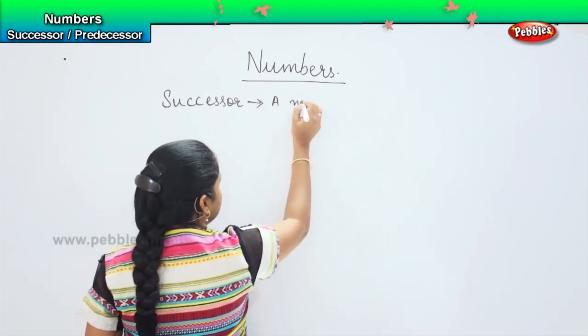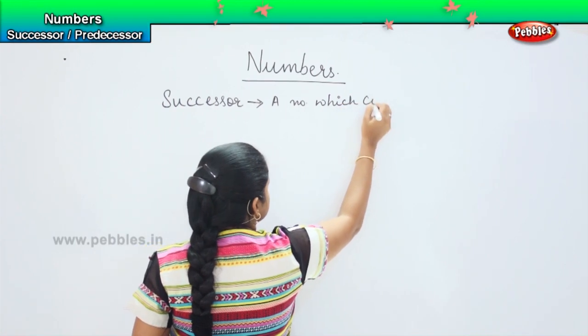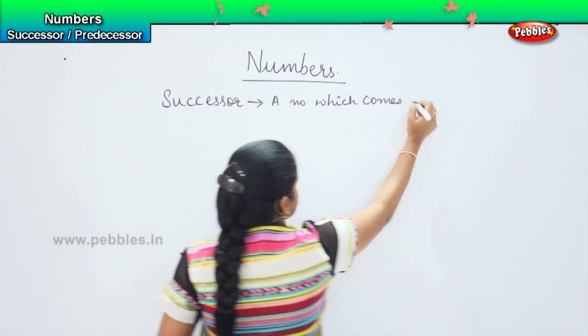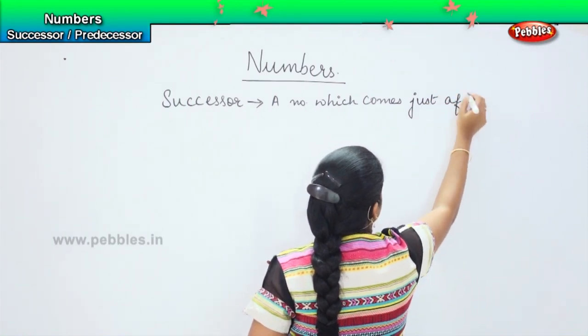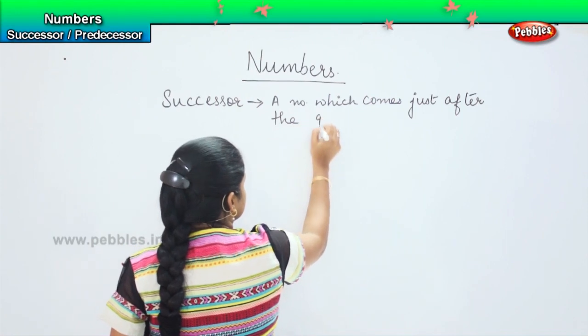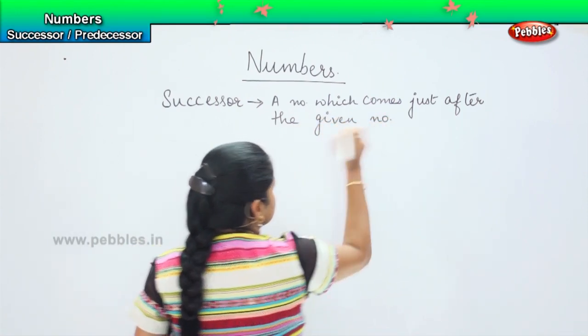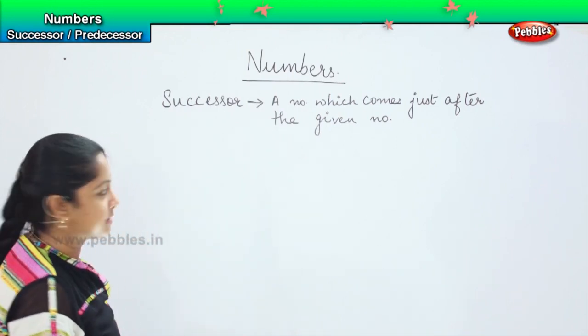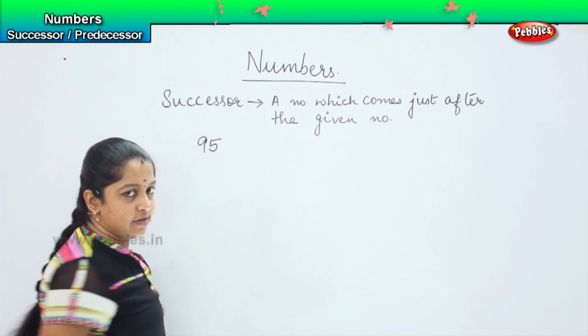A number which comes just after the given number, okay. For example, if I want to know what is the successor of 95?